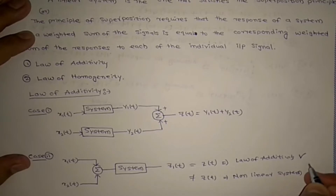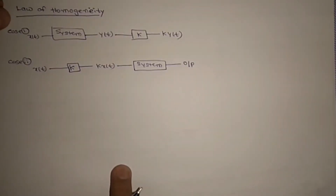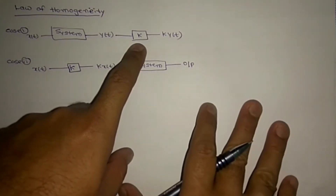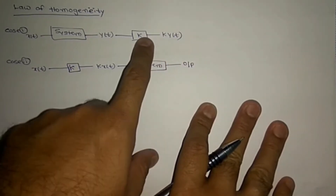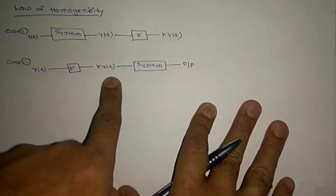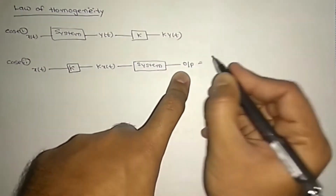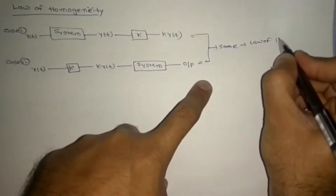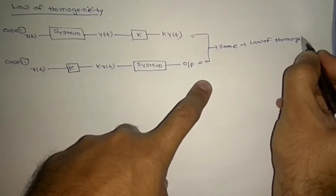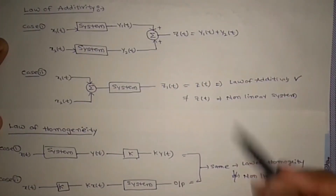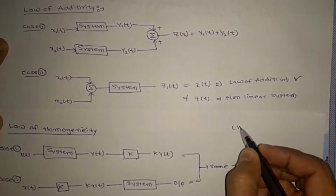From the law of additivity alone, you cannot conclude a system is linear, because we also need to check the law of homogeneity. If a system satisfies the law of additivity, then we check: if input X(t) gives output Y(t), and multiplying the output by constant K gives K·Y(t), we also check if multiplying the input by K to get K·X(t) and passing it through the system gives the same result. If both outputs are the same, the system satisfies the law of homogeneity. If both laws are satisfied, the system is linear.